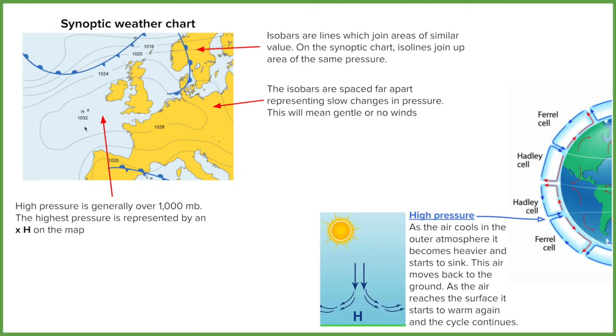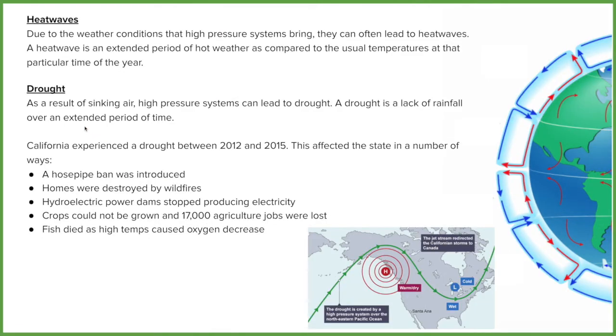So what hazards can this produce? Well, there are two and they are linked. So if we get stable air and a stable weather system, so it's going to hang around for a couple of days to a couple of weeks and we've got no cloud cover and sun's coming in constantly, then there is the potential for a heat wave.